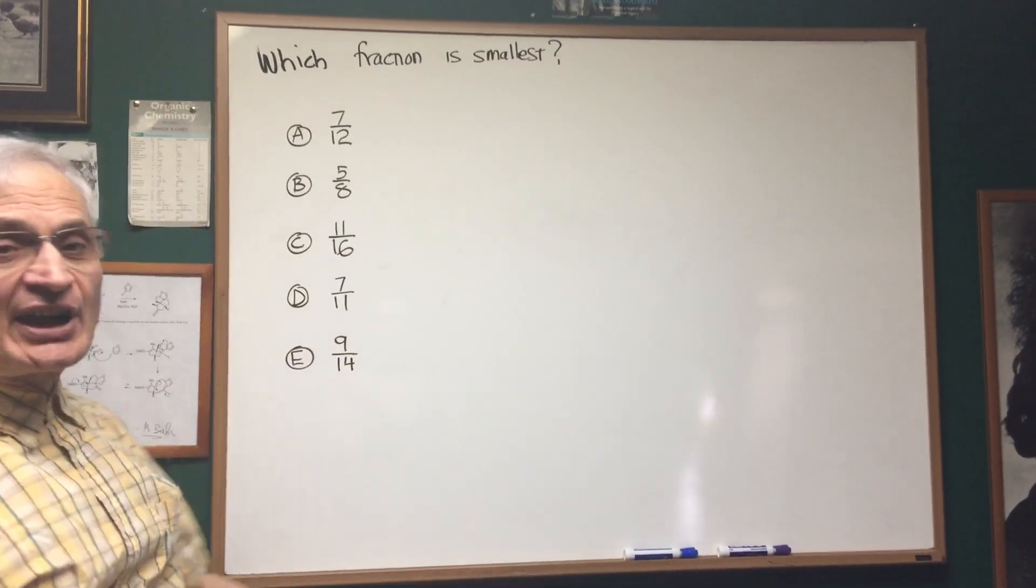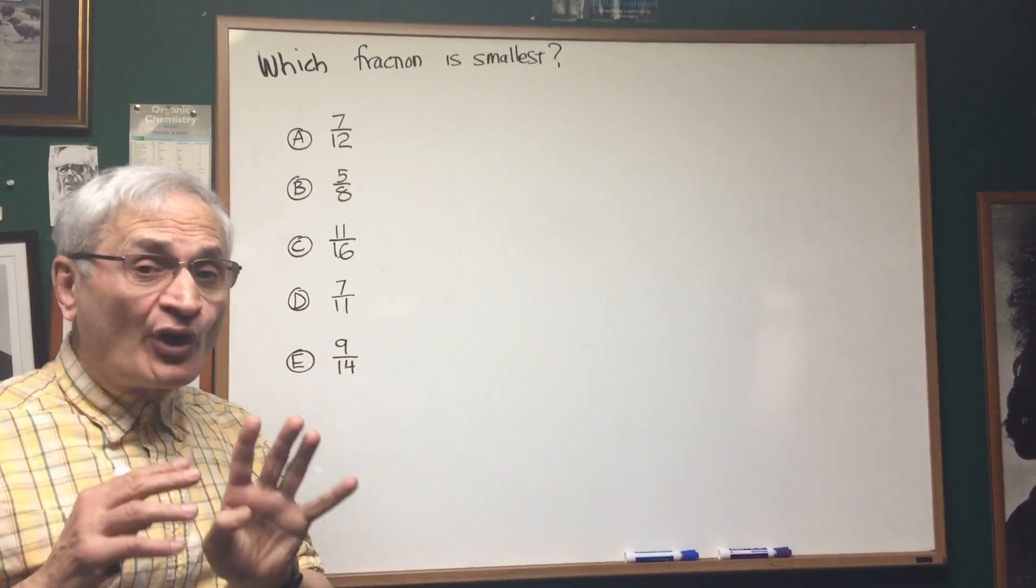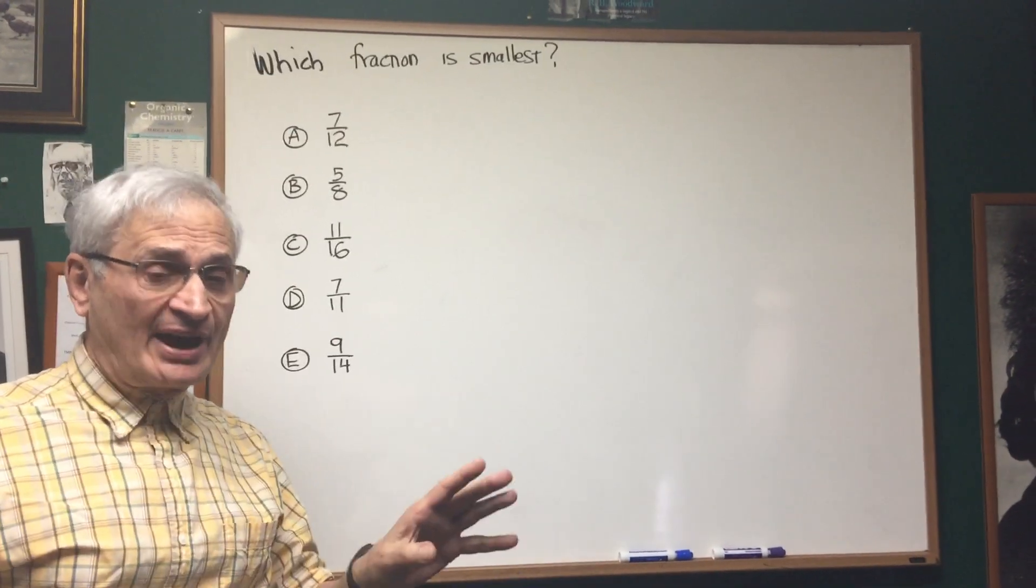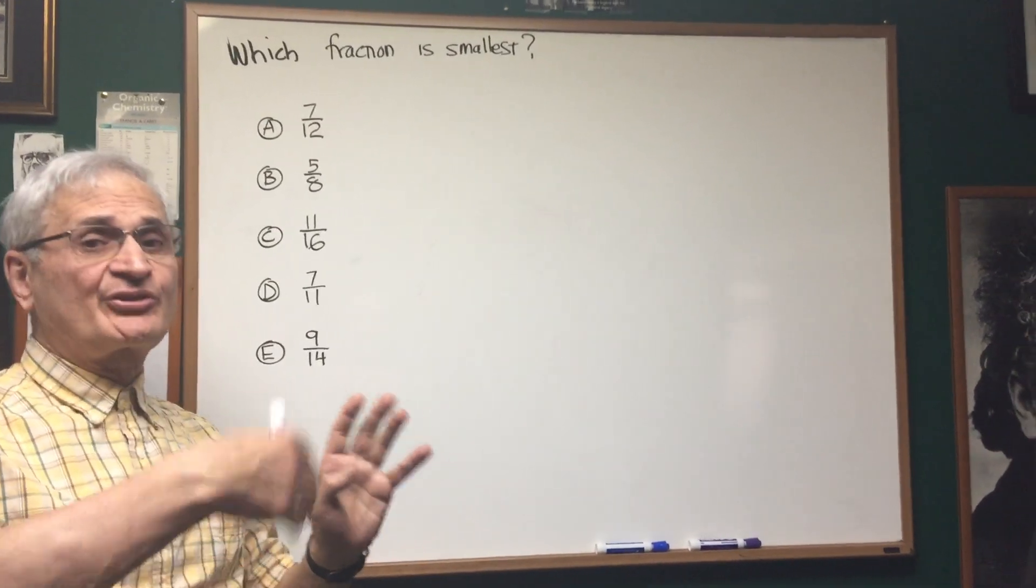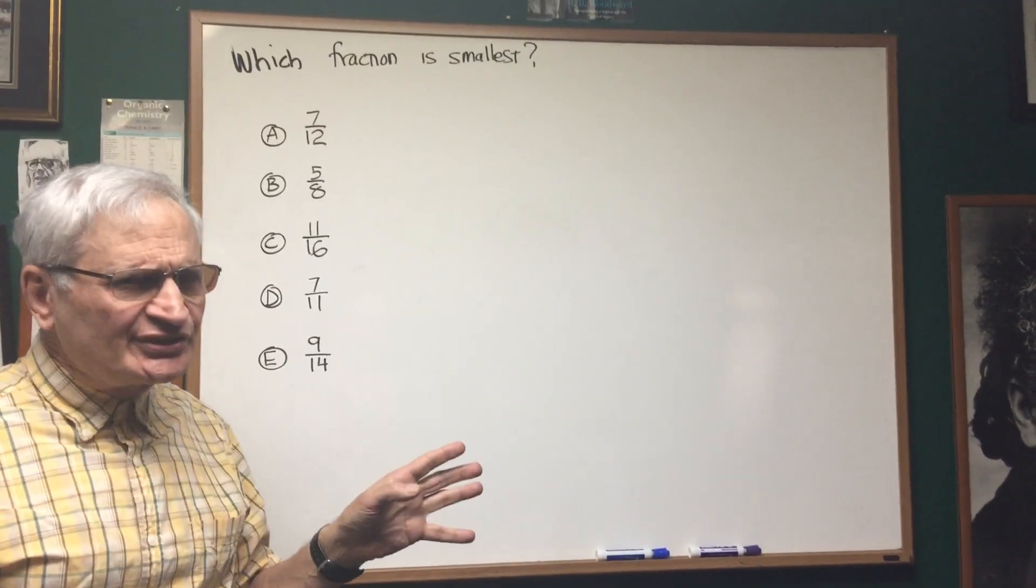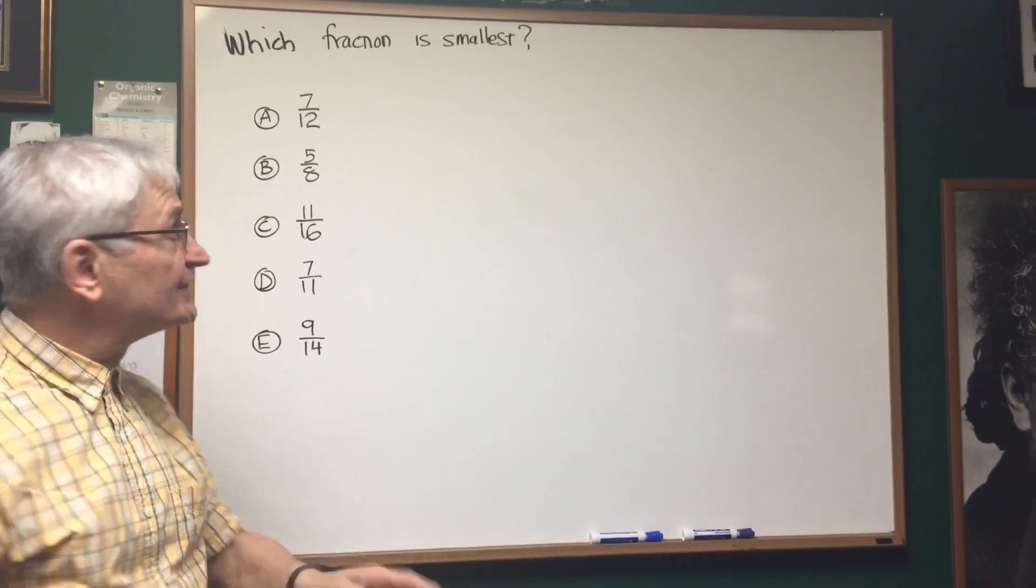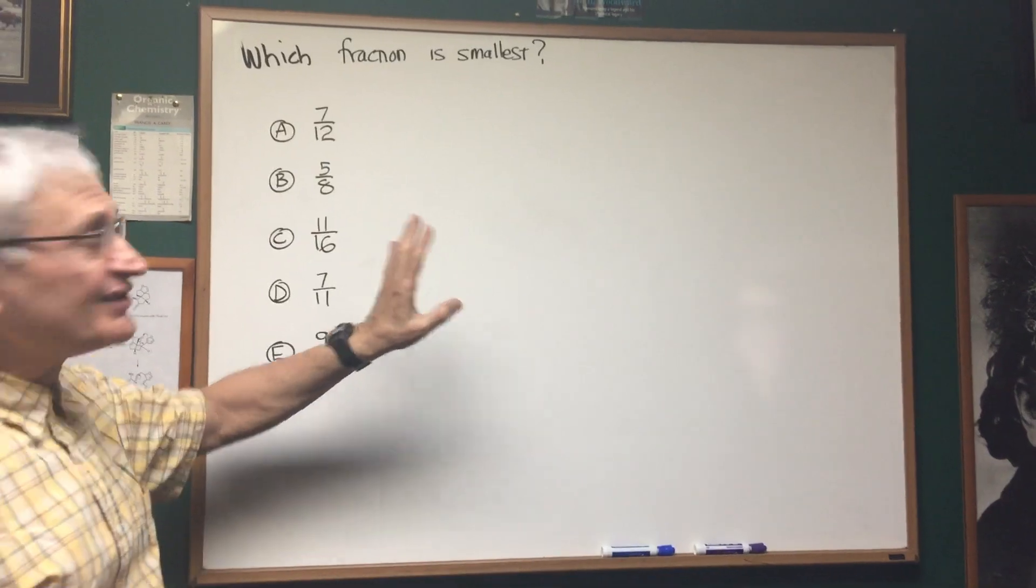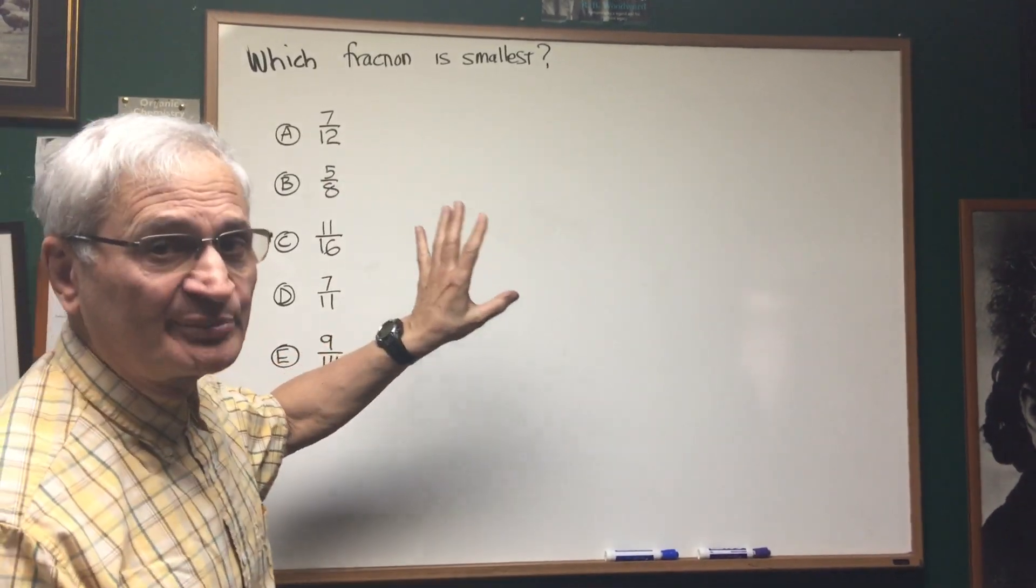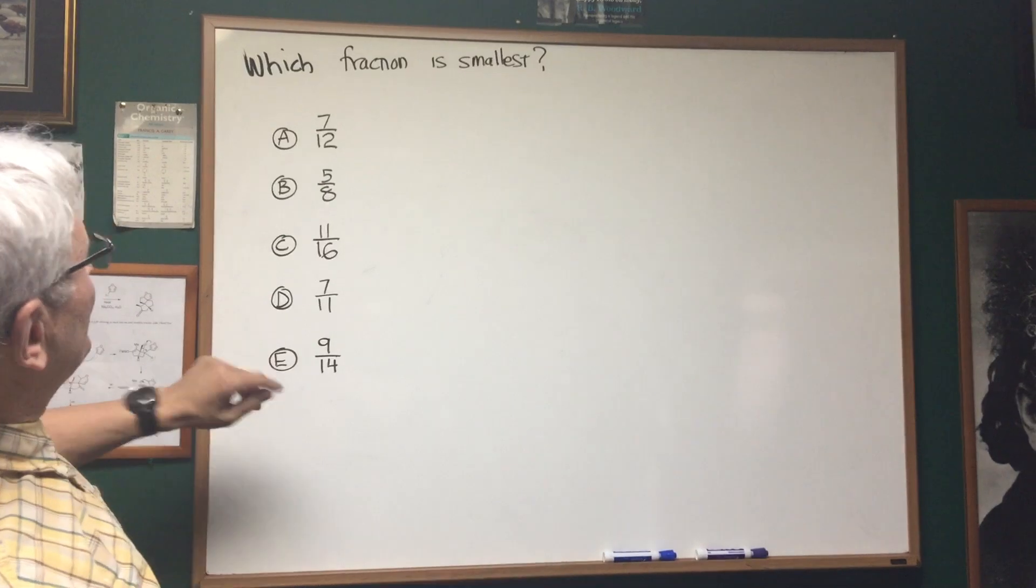Now, I've chosen this set of fractions so I can show you four different techniques of fraction comparison, of determining which fraction is larger. On a standard DAT test, you may not have to use all four techniques, but I constructed this so all four techniques will be displayed. Which fraction is smallest?